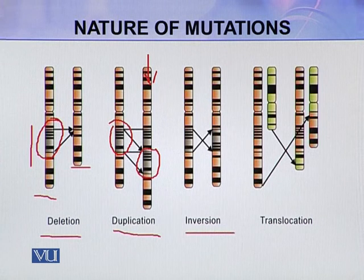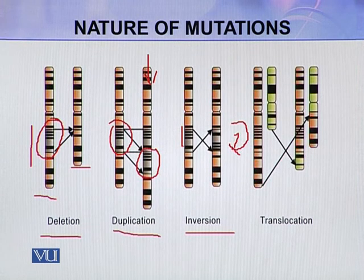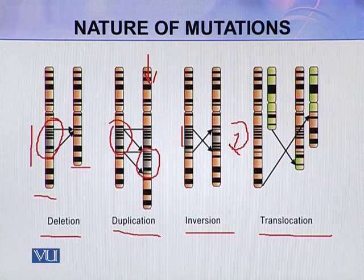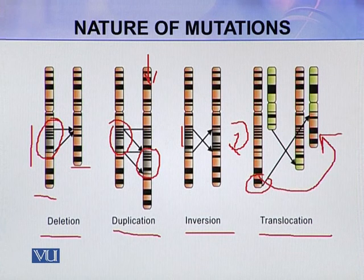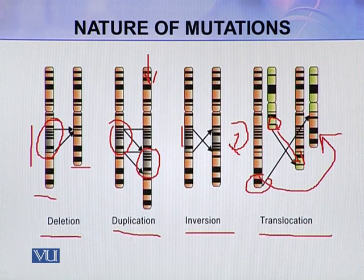Similarly, in case of inversion, a sequence has been inverted so it runs in the opposite direction — such mutations are called inversions. In case of translocations, a piece of chromosome may be deleted and attach to another chromosome. These are called translocations. Deletions, duplications, inversions, and translocations are large-scale mutations, in contrast to point mutations.